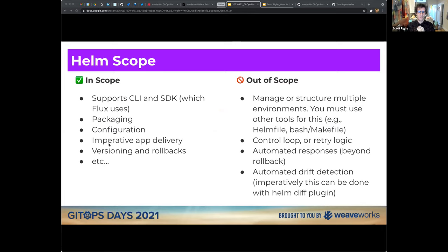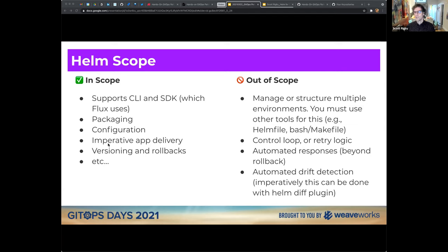To guide you through this, I'll show a bit about Helm and Flux's scope to make it clear what Flux does in addition to Helm. Helm 3 is now just a client and SDK — that was part of the design for Helm 3. Helm provides the SDK for other tools to make best use of its internal functionality, and this is what Flux does. Helm's scope as a client and SDK covers packaging, configuration, and imperative app delivery.